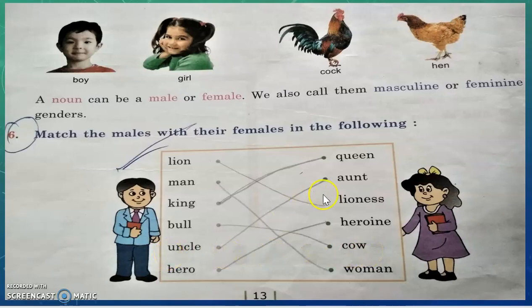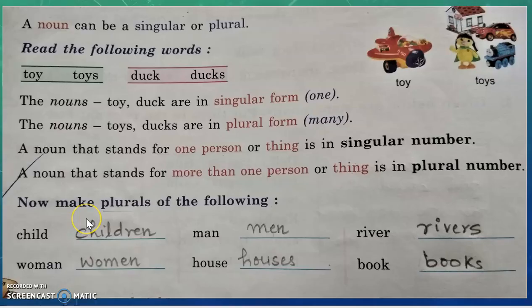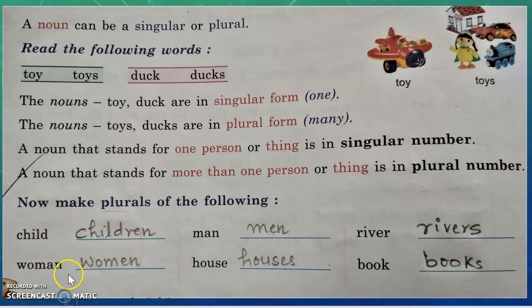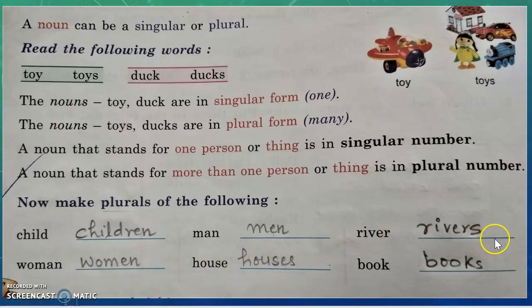Likewise, uncle — aunt. Hero — heroine. Now let's move to the next question: here nouns are given, we have to write the plural form. Child — children. Woman — women. Man — men. House — houses. River — rivers. Book — books.